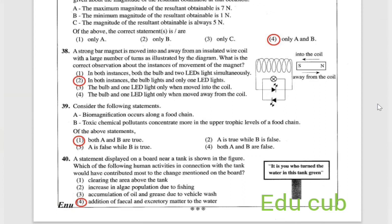Last one, question 40: the statement displayed on the board near the tank is shown in the figure. Which of the following human activities in connection with the tank would contribute most to the change mentioned on the board? It is you who turn the water in the tank green. Let's see the answers. Cleaning the area above the tank, increase in algae population due to fishing, accumulation of oil and grease due to vehicle wash, addition of fecal and excretory matter to the water. This is the answer. The fourth one is correct. Thank you.